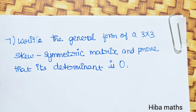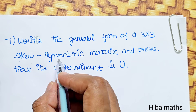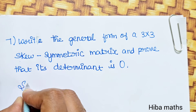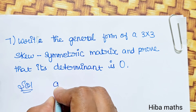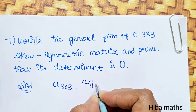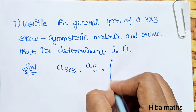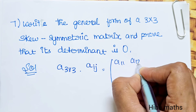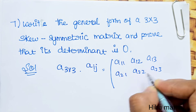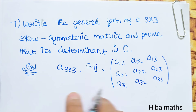Now let's see the 7th question: write the general form of a 3 by 3 skew symmetric matrix and prove that its determinant is 0. First, we write the general form of a 3x3 matrix with elements a11, a12, a13, a21, a22, a23, a31, a32, a33.